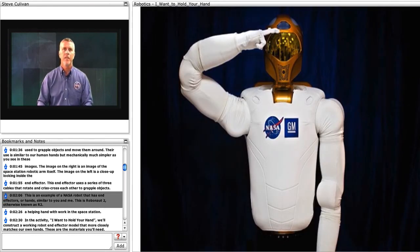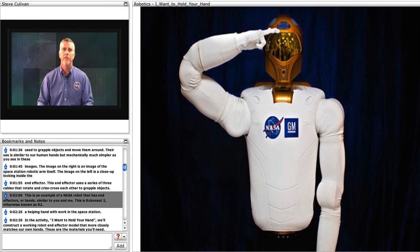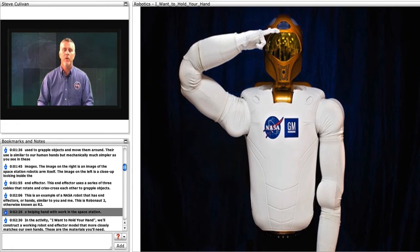This is an example of a NASA robot that has end effectors, or hands, similar to you and me. This is Robonaut 2, otherwise known as R2. R2 is a humanoid dexterous robot who recently arrived on the ISS. Not only can those hands salute, but they can lend the astronaut a helping hand with work in the space station.